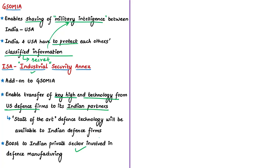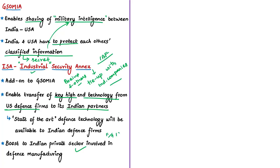The ISA will give a boost to the Indian private sector, which is presently looking for a greater role in defense manufacturing. The Indian defense minister has hoped that the ISA will help in smooth transfer of classified technology and information between private companies of the United States and India. The Indian Air Force is planning to expand its fleet by purchasing around 114 fighter jets, and US companies such as Boeing and Lockheed Martin are among the bidders. Now they can tie up with Indian companies since the ISA pact has been signed. Some of the technologies on offer include the F/A-18 Super Hornet and the F-21.